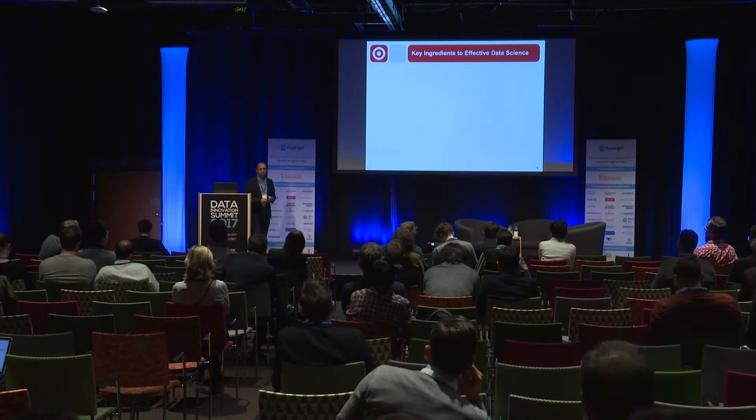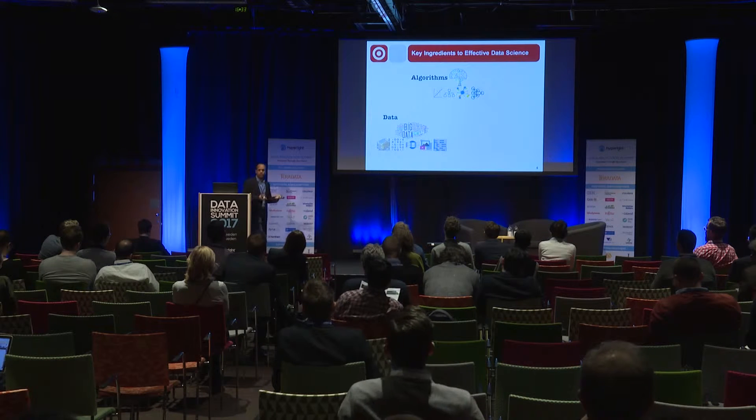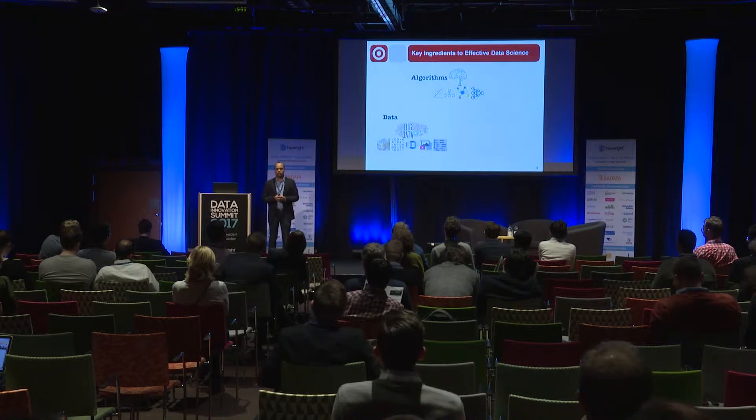So how can we build systems that enable effective data science in the presence of these diverse applications? There are actually three key ingredients to effective data science. First and foremost is obviously the algorithms — effectively the tools we ask about before hiring a data scientist: do you know predictive algorithms, regression techniques, deep learning? Algorithms are obviously key and there are many of them. The second part is data, and we've all heard about the different Vs of data: volume, variety, velocity, and so on.